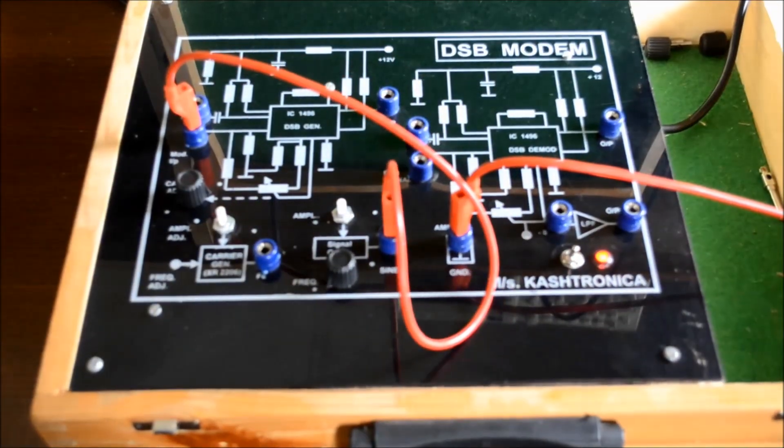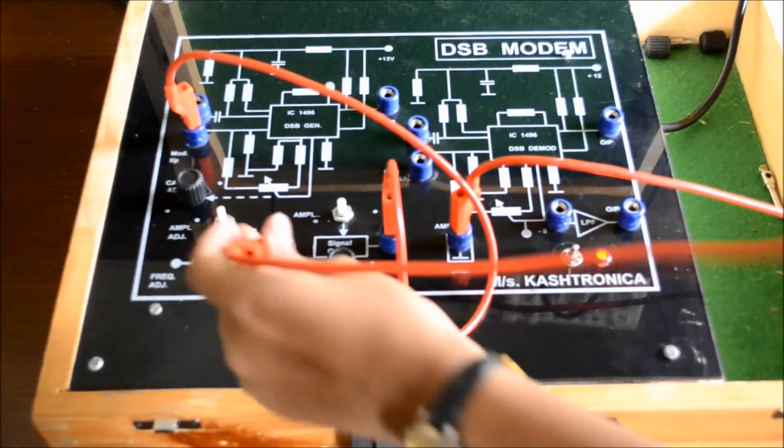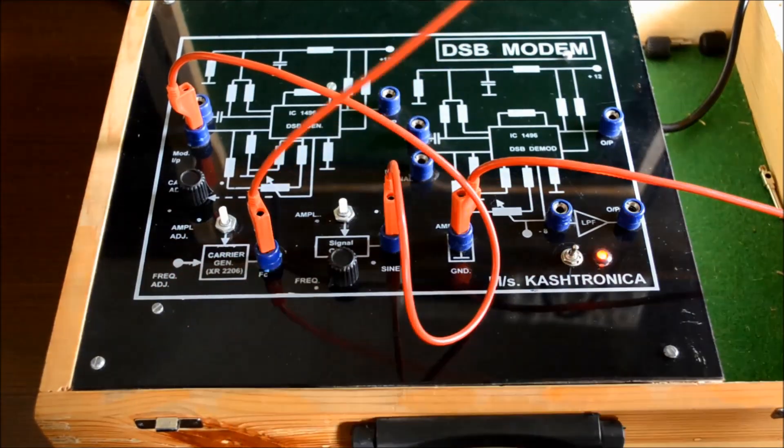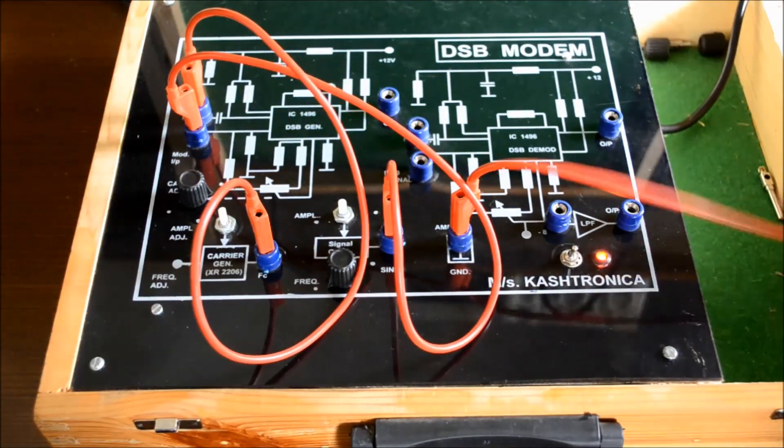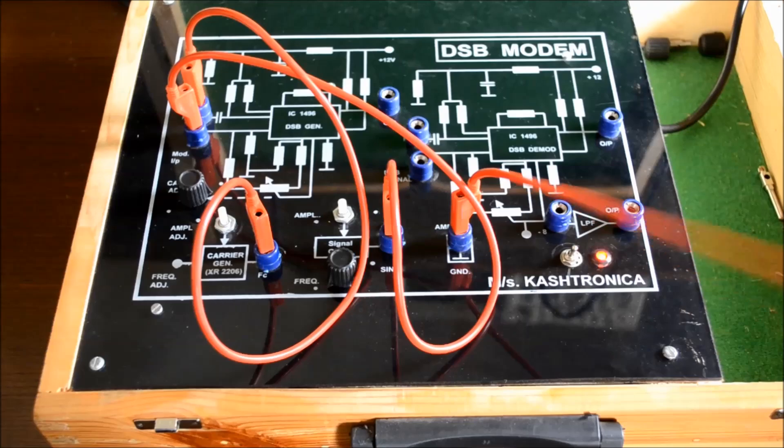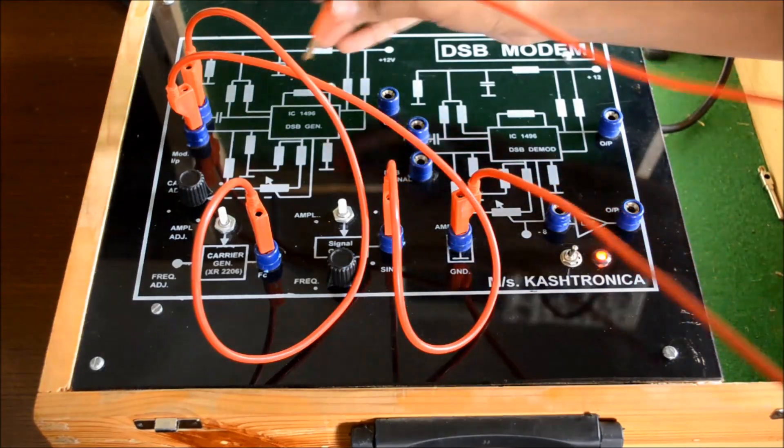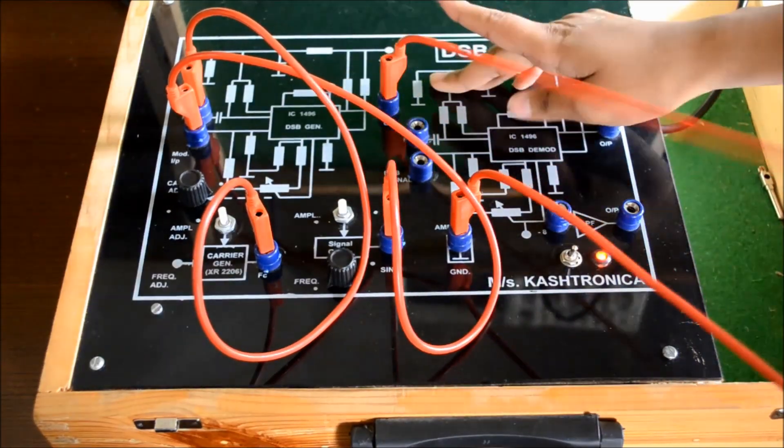And the carrier generated by this is given to another input of IC 1496, which is FC. And whatever DSB-SC generated will be getting at the output of IC 1496. We are getting output like this.